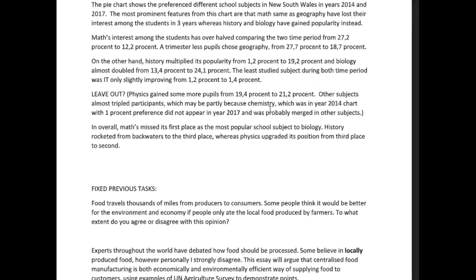The grammar is a little off, and I'm not entirely sure about the organization here. You're saying that maths dropped and geography dropped, then that history increased, that IT increased, and then you have a new paragraph for physics saying it too increased, and that other subjects tripled. But then you say chemistry decreased — it disappeared. I would not have put that there. Physics probably should have gone in the previous paragraph, and you should have found some other place for chemistry. I don't think those two sentences belong with each other.